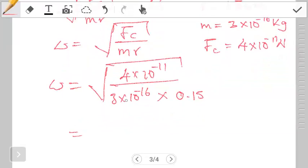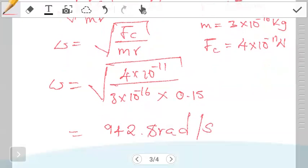When we perform this calculation, we can quickly verify this gives us 942.8 radians per second.